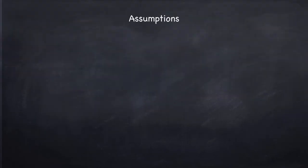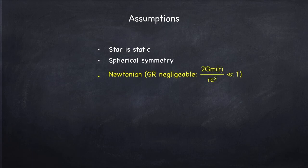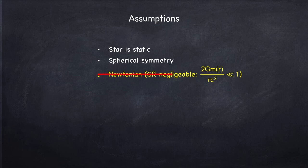Let's start off by going over some of the assumptions we're making in this video. When we looked at hydrostatic equilibrium in Newtonian gravity, we assumed that the star was static, that it was spherically symmetric, and that general relativity could be ignored — meaning that this quantity, called the metric deviation, was much less than 1. In this video, we're going to forego this last assumption. In the Newtonian derivation, we also assumed the polytrope relation in what was called the standard model of stars, but we won't be making use of those assumptions in this video.